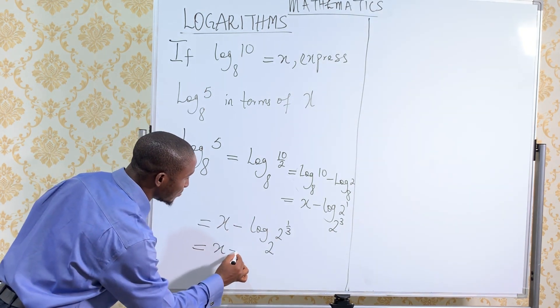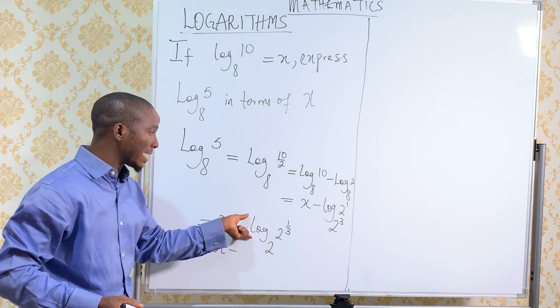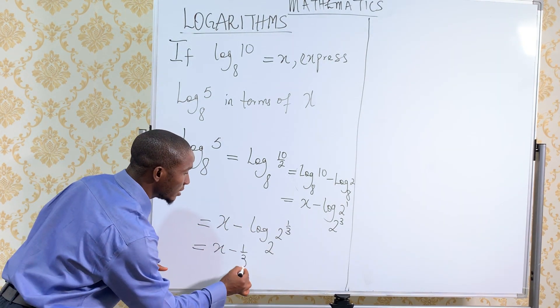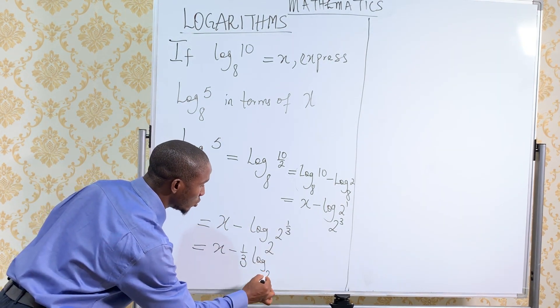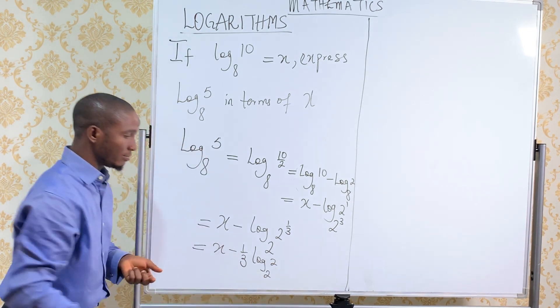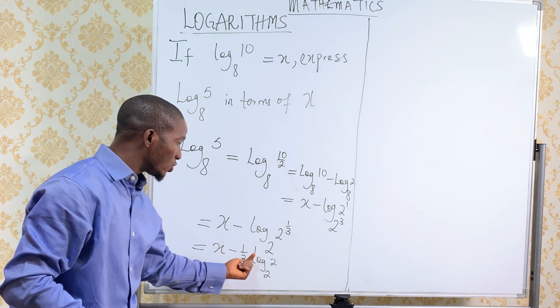We have x minus, this is the power. The power will come to the front. It becomes 1 over 3. And we now have log 2 base 2.